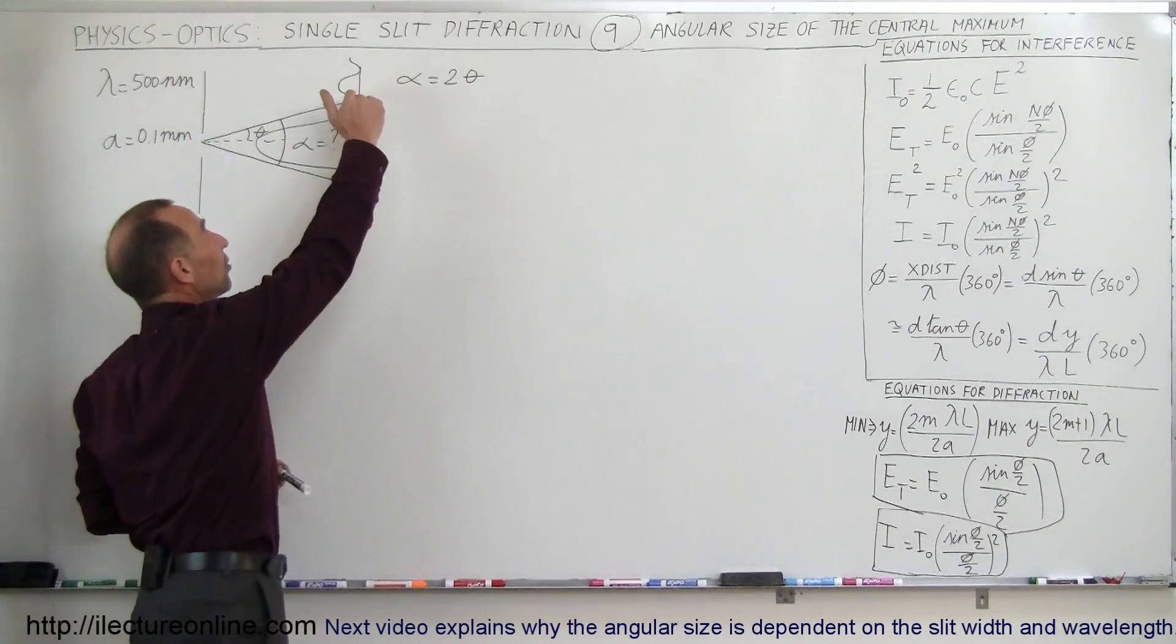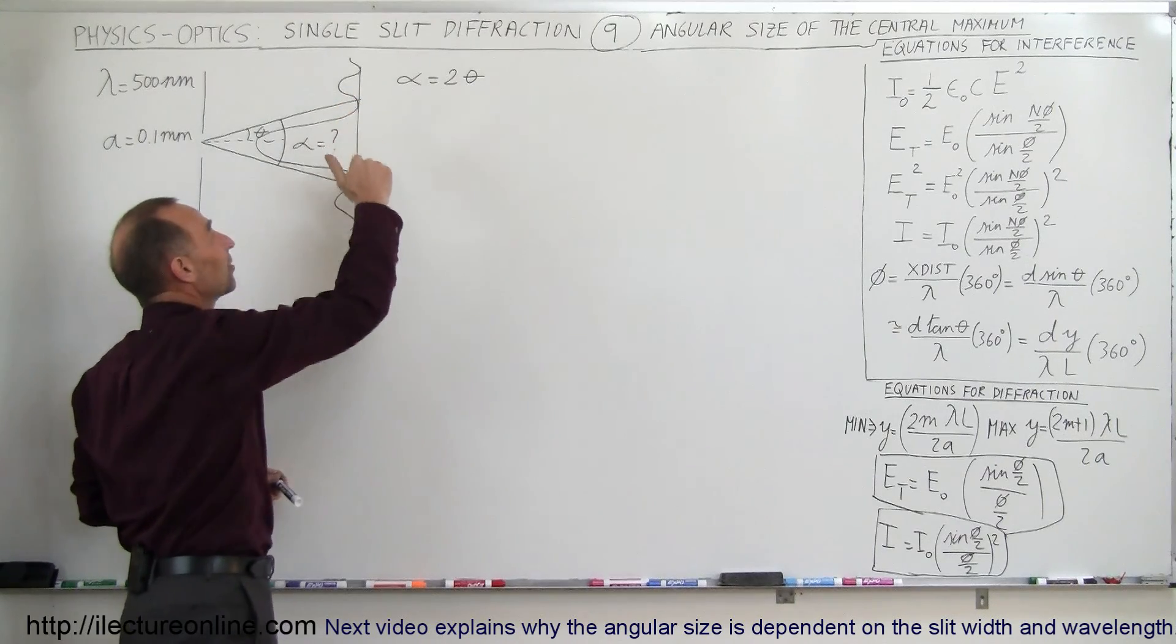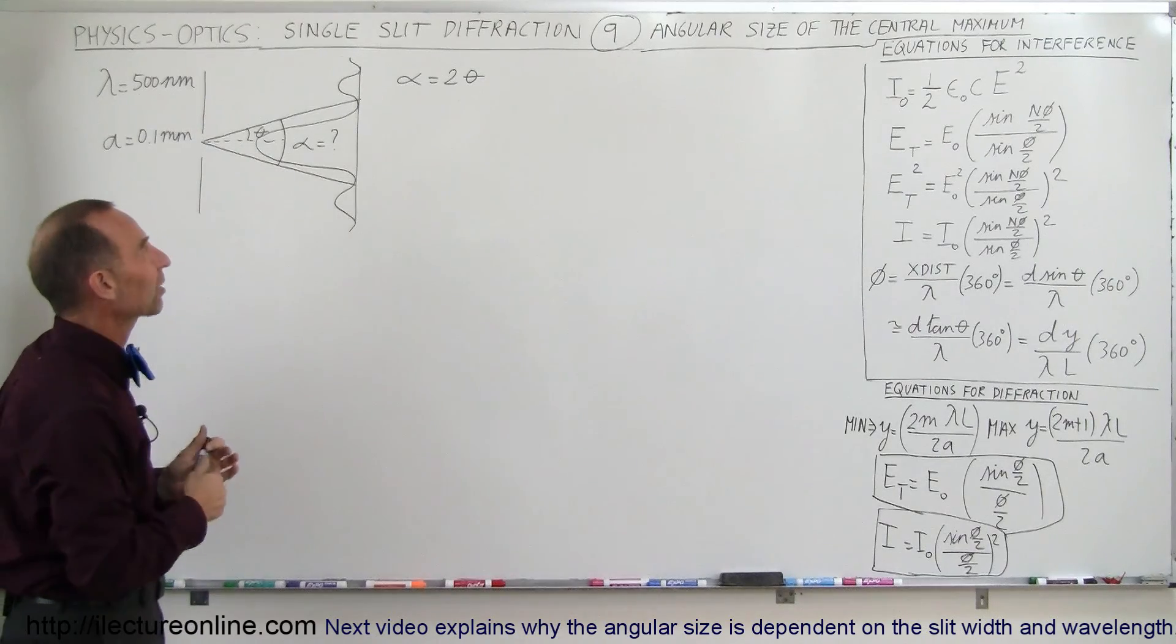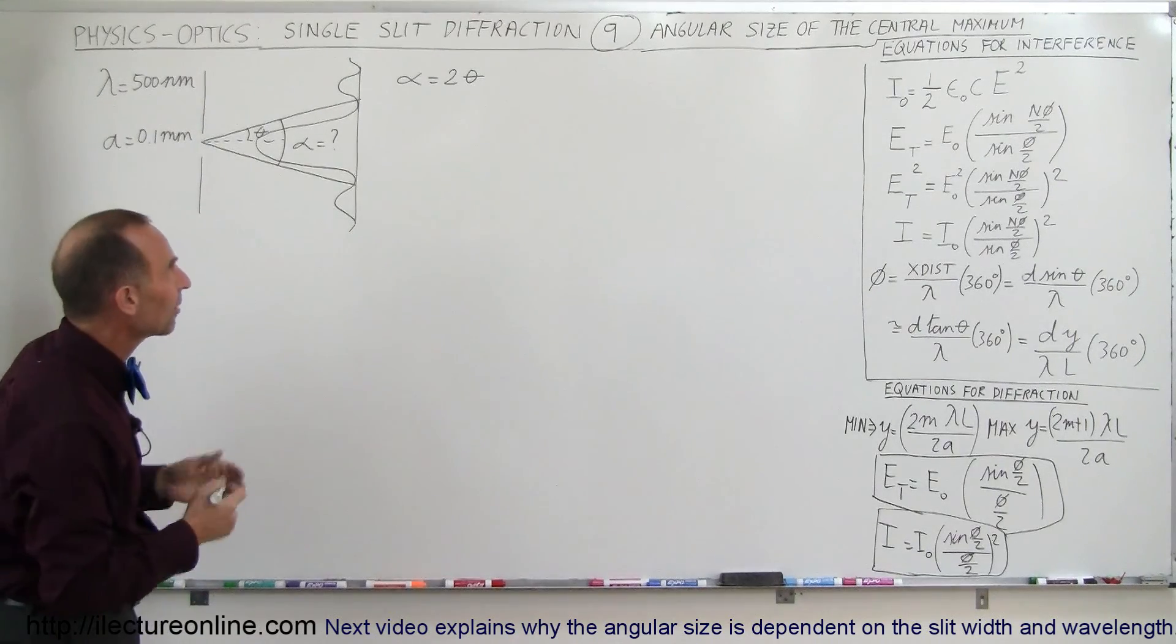What is the distance, the angular distance, from the first minimum on one side to the first minimum on the other side? In other words, what is the width of the central maximum in angle, the angular size?